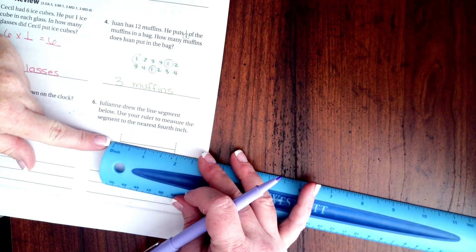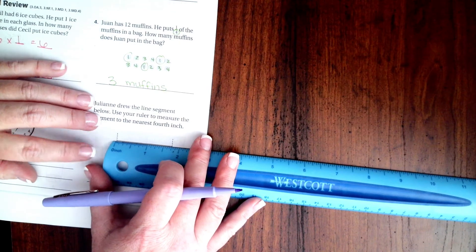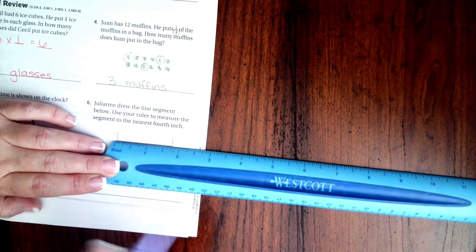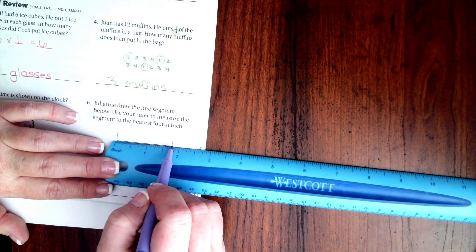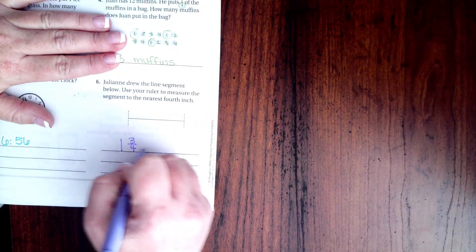So I need to start where the lines are and not where the ruler starts. That's about right here, so that's about one and three quarters of an inch. One and three quarters inches.